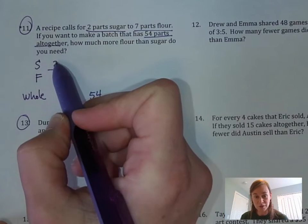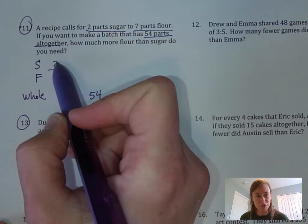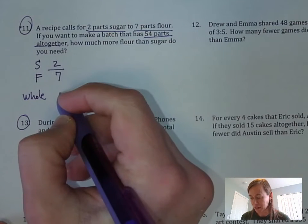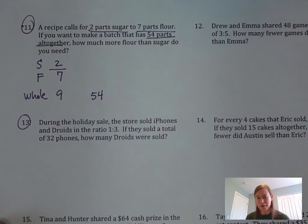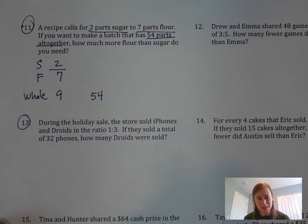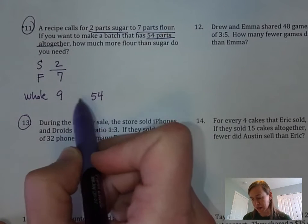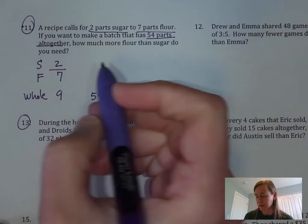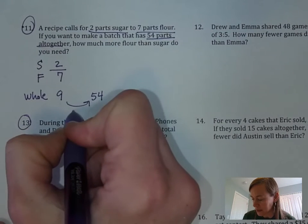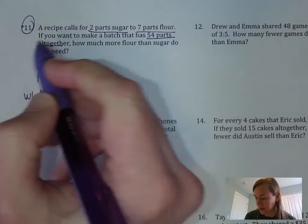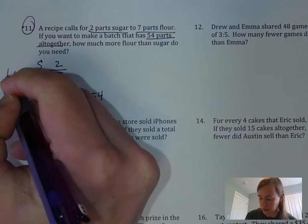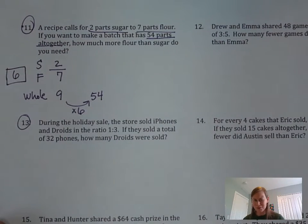Let's figure out the whole for this ratio. In order to do that, you just add the parts together. So 2 plus 7, that equals 9. Now probably the simplest fastest way to get this answer is to figure out the scale factor that takes us from 9 to 54. I know that 9 times 6 is 54, so 6 is that scale factor.